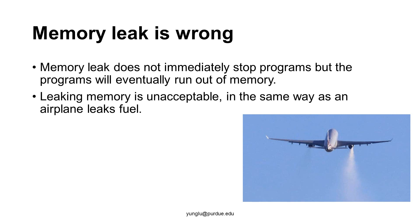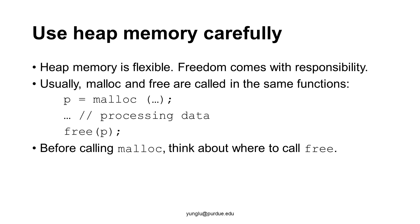Think of memory leak like leaking fuel. ECE 264 will use heap memory a lot. Heap memory gives a lot of flexibility. The freedom comes with responsibility. Each malloc must have one and only one free. Each free must have one and only one malloc. They always come in pairs. Always. No exception.